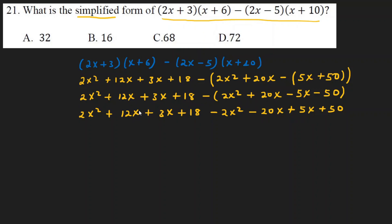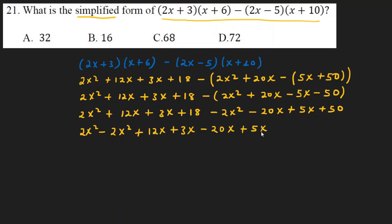So we have the variable x with exponent, giving 5x. We collect the constant variables. We have 2x squared minus 2x squared, plus 12x plus 3x, minus 20x plus 5x, and plus 18 plus 15.